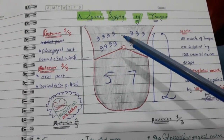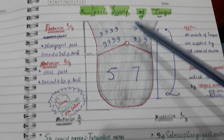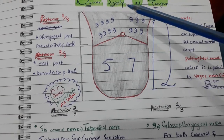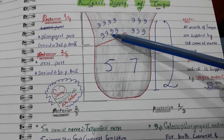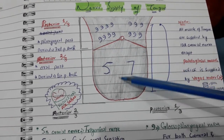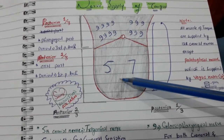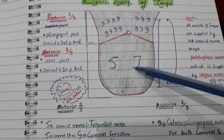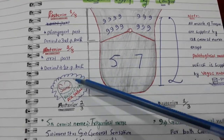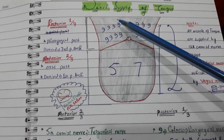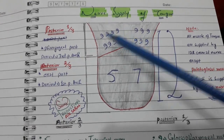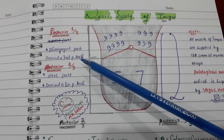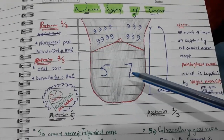Today we will talk about the neural supply of the tongue. The tongue consists of an anterior two-thirds and a posterior one-third. The anterior two-thirds are present in the oral cavity, which is why we call it the oral part, and it is derived from the first pharyngeal arch. The posterior one-third is called the pharyngeal part and is derived from the third pharyngeal arch.